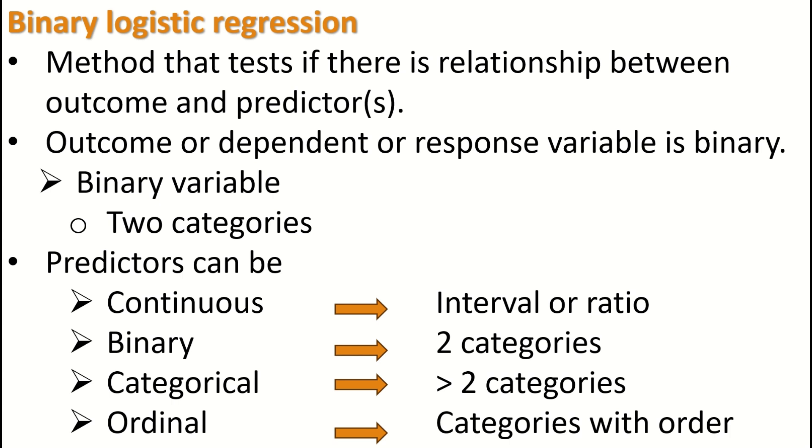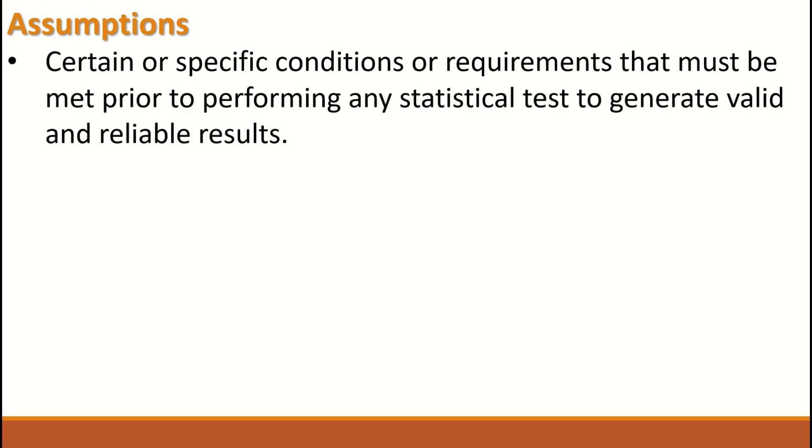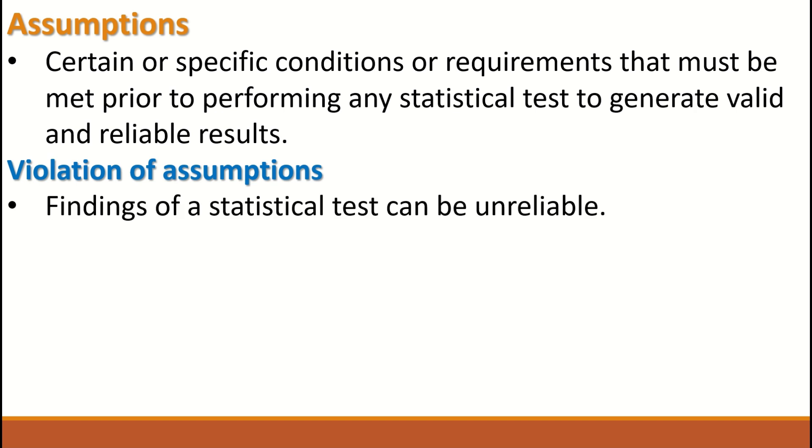So to perform binary logistic regression, you have to have an outcome that is binary and one or more predictors. These predictors can be either continuous, binary, categorical, or ordinal. What are assumptions? Assumptions are certain specific conditions, requirements, or criteria that must be met prior to performing any statistical test. These criteria and requirements about the data have to be met before performing any statistical test to generate valid, credible, and reliable results.